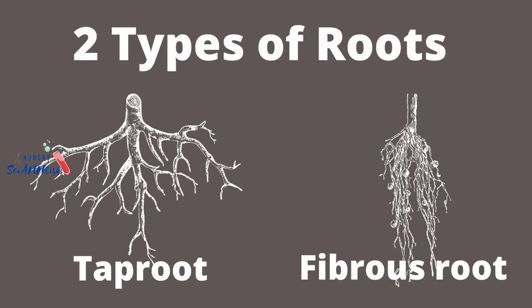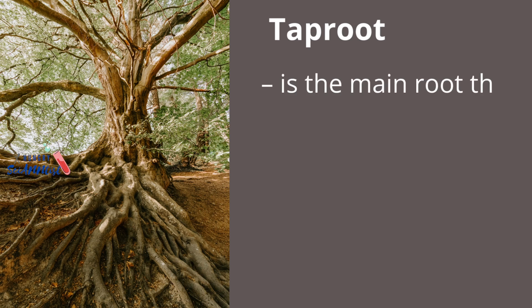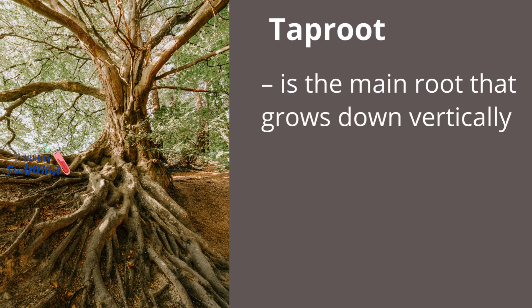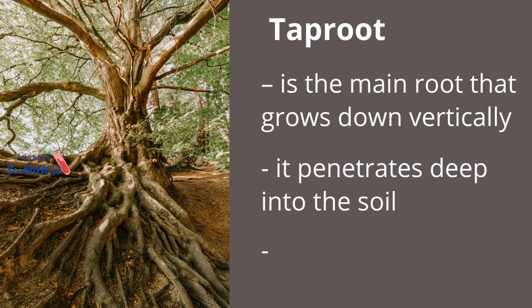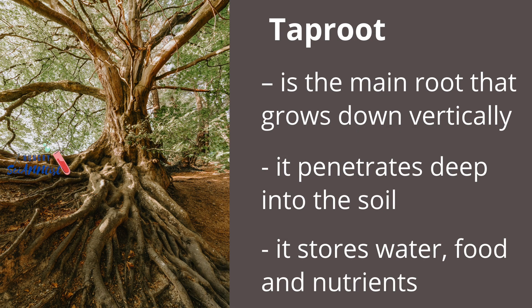Next, let's learn about the two types of roots: taproot and fibrous roots. Taproot is the main root that grows down vertically. It penetrates deep into the soil and stores water, food, and nutrients.